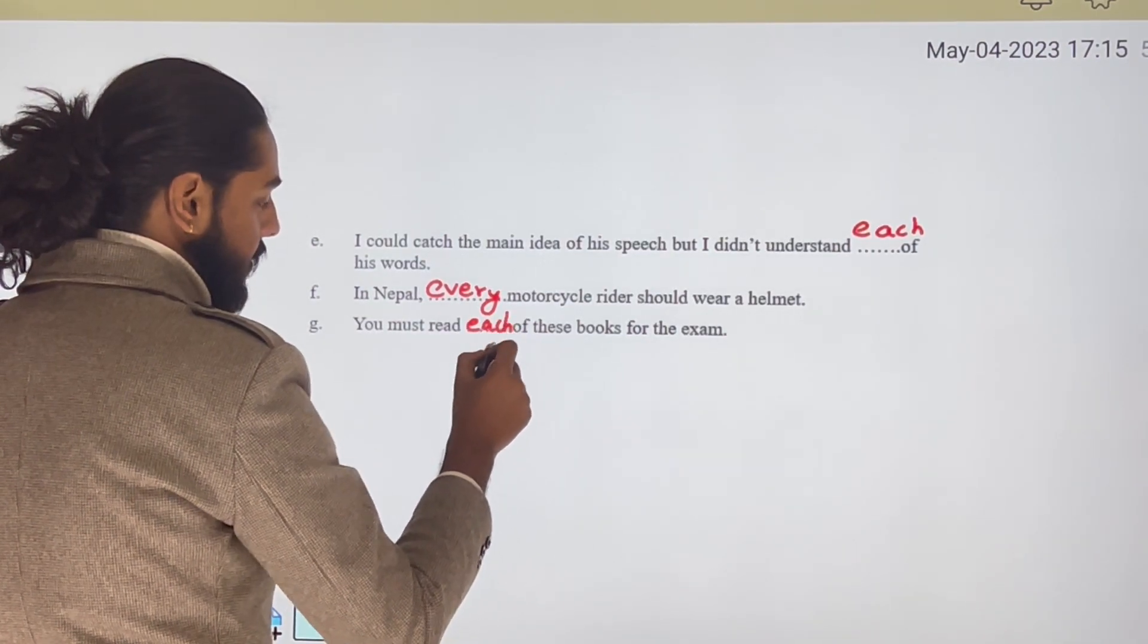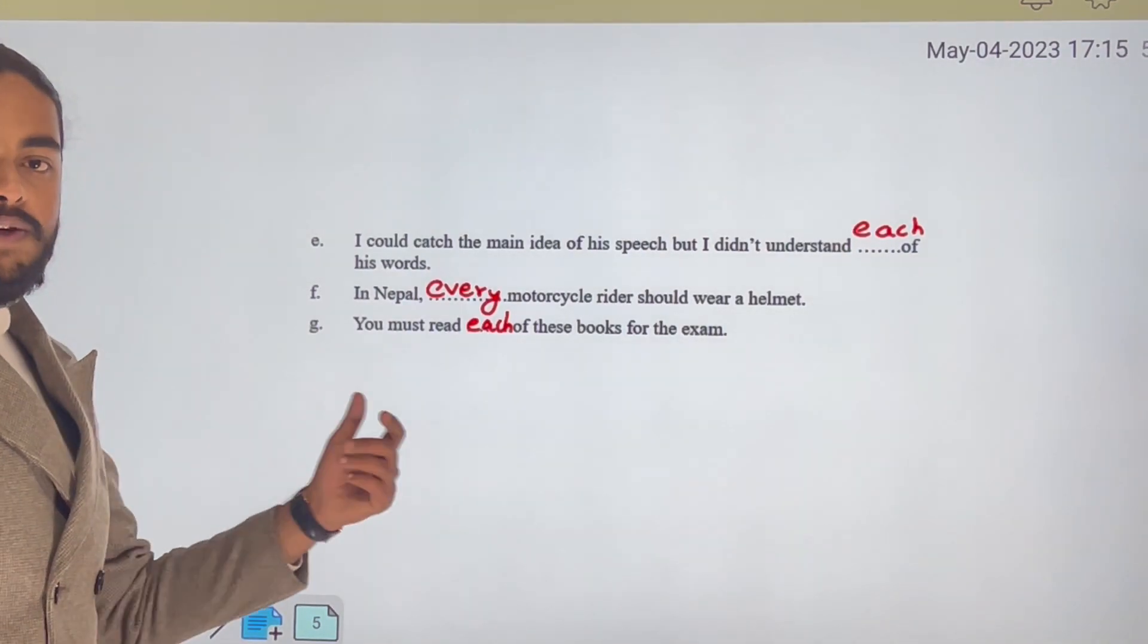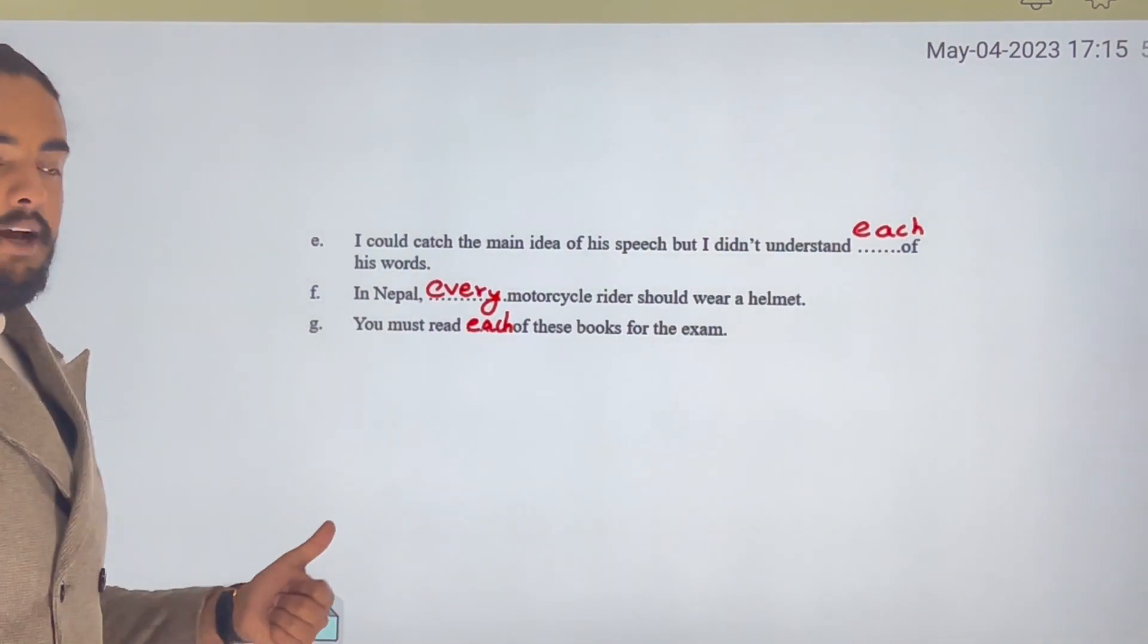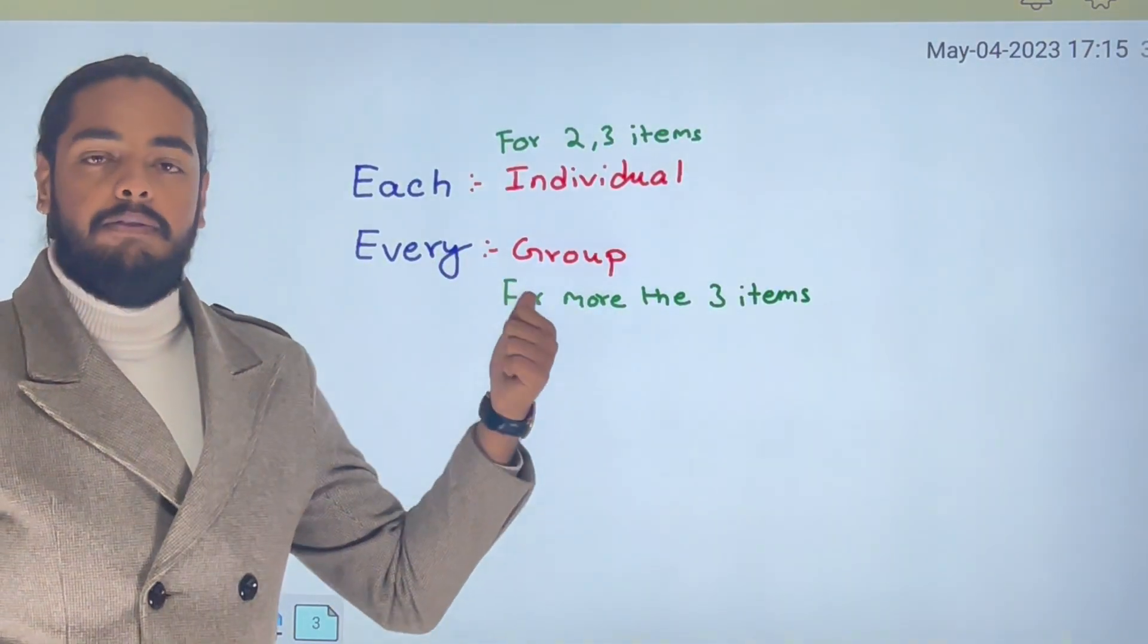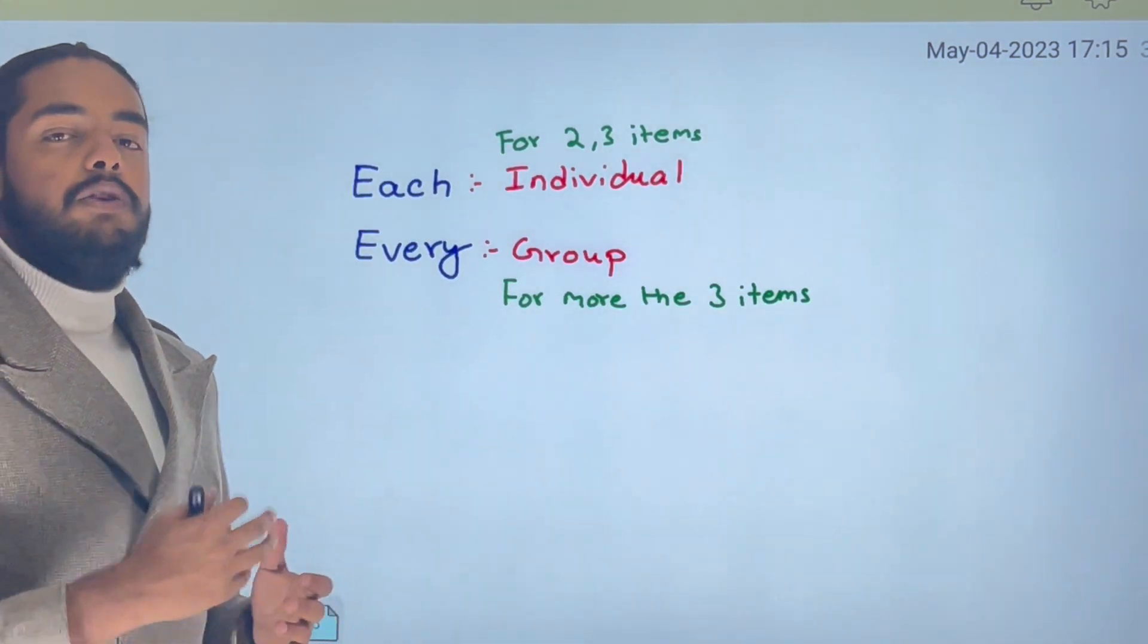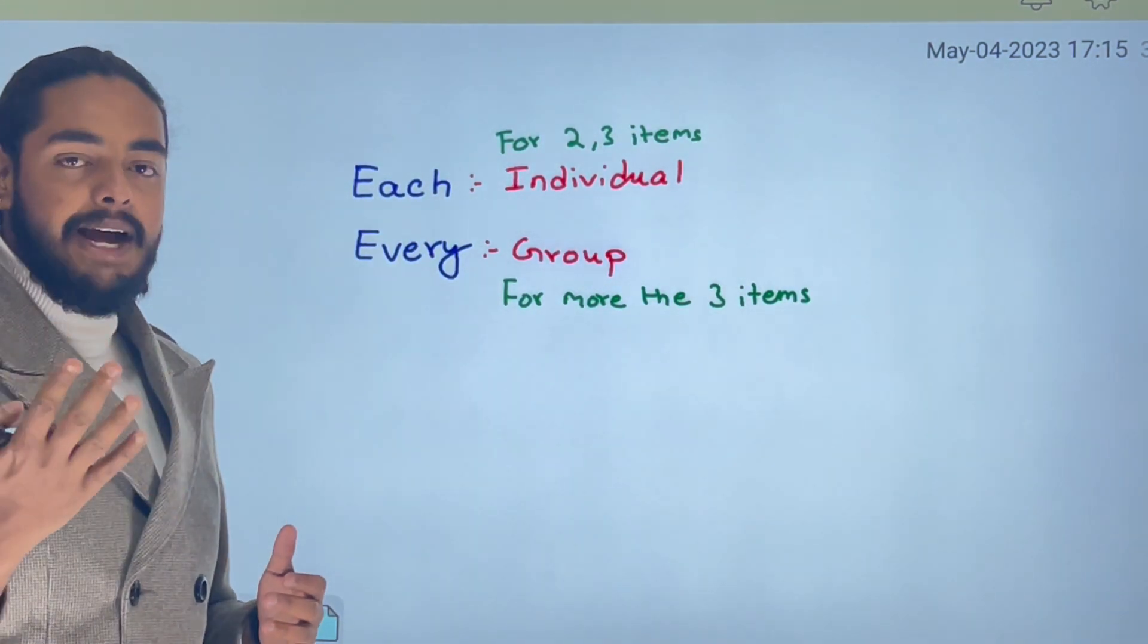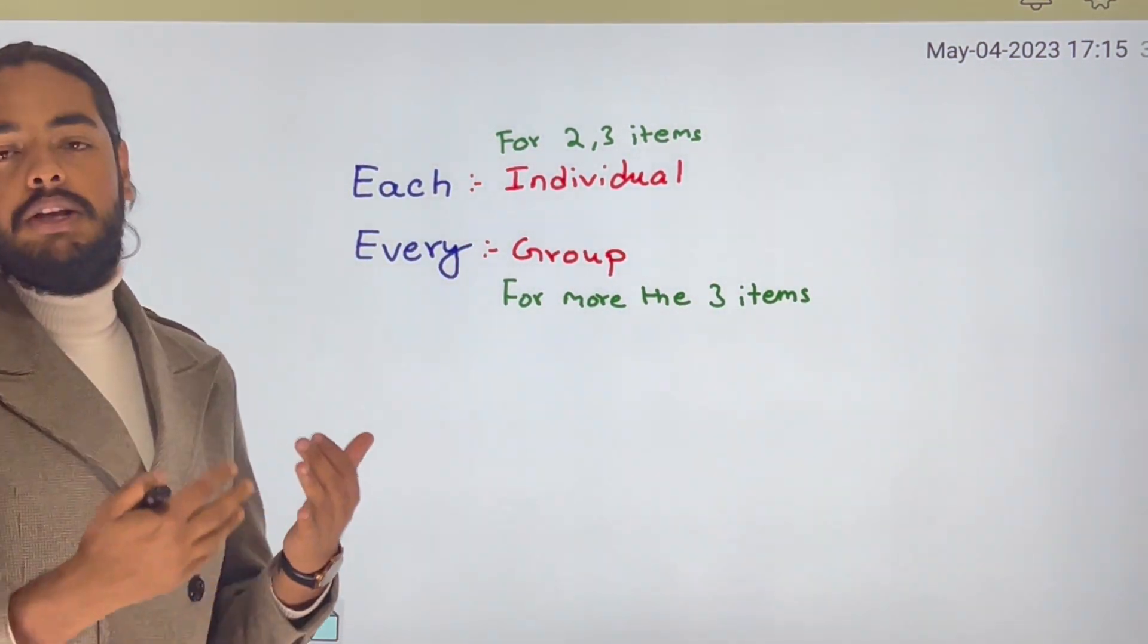So this was a short video, right? The main idea is: each is individual, every is a group. Each is for two or three objects at max, every is for more than three.